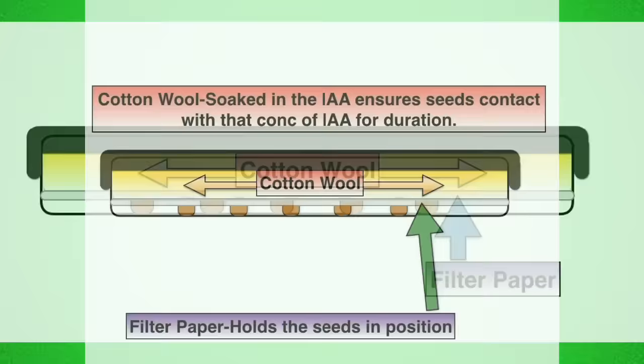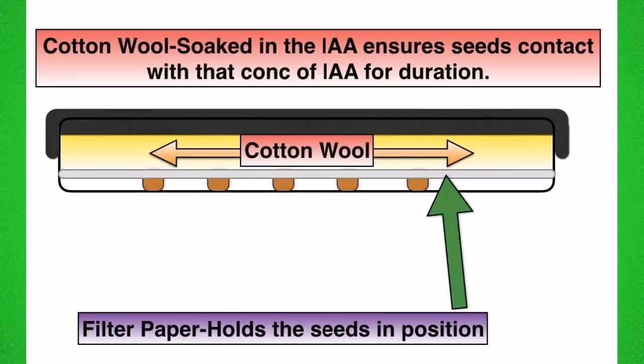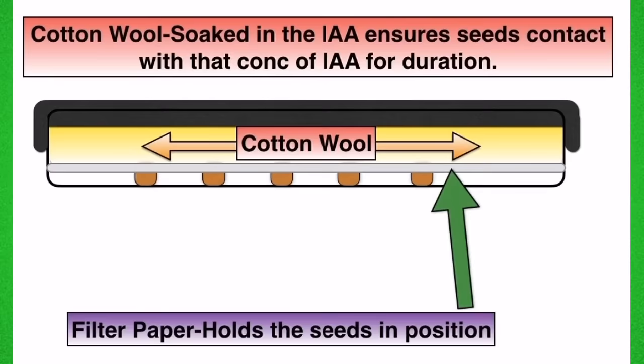Wetting the filter paper made sure that the seeds stayed in place. And soaking the cotton wool ensured that each of the seeds in each of the plates was in contact with the solution for the duration of the experiment.